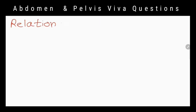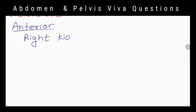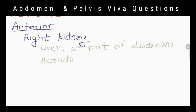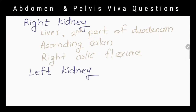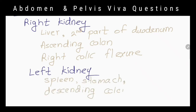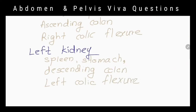What are the relations of the kidneys? The right kidney is anteriorly related to the liver, second part of the duodenum, ascending colon, and right colic flexure. The left kidney is anteriorly related to the spleen, stomach, descending colon, right colic flexure, and pancreas and its vessels.